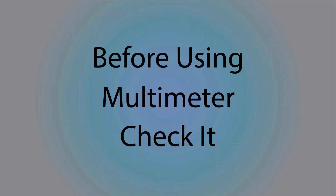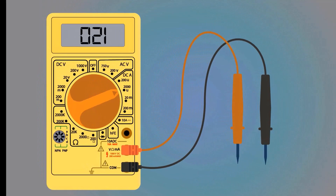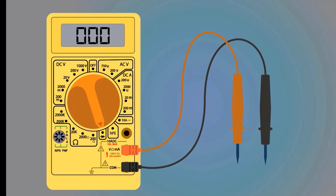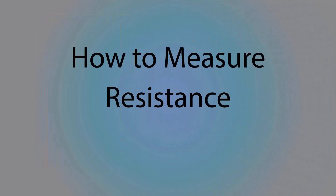Before using the multimeter, check whether it is working or not. Take the multimeter and move the selector switch to continuity. Short both probes. When the negative and positive terminals meet, the multimeter will produce a sound. This means the multimeter is okay and ready for use.